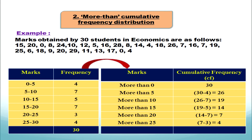For more than 0, all 30 students are included, so cumulative frequency is 30. For more than 5, we exclude the 0 to 5 class: 30 minus 4 equals 26. For more than 10, exclude 5 to 10 also: 26 minus 7 equals 19. For more than 15: 19 minus 5 equals 14. For more than 20: 14 minus 7 equals 7. For more than 25: 7 minus 3 equals 4.